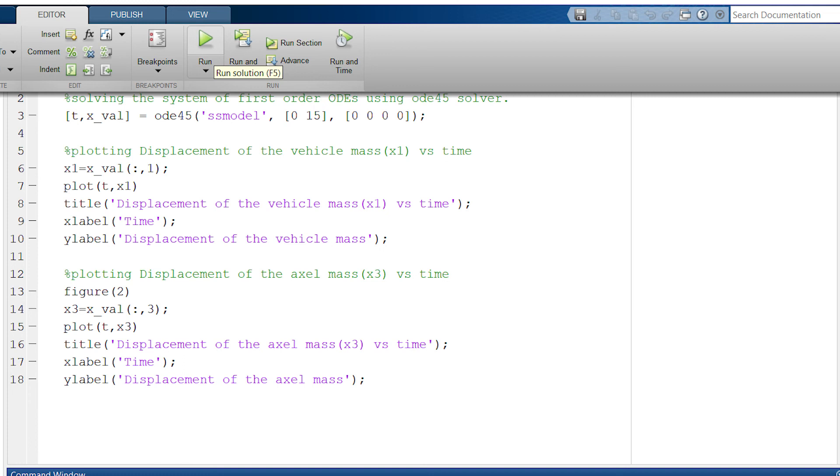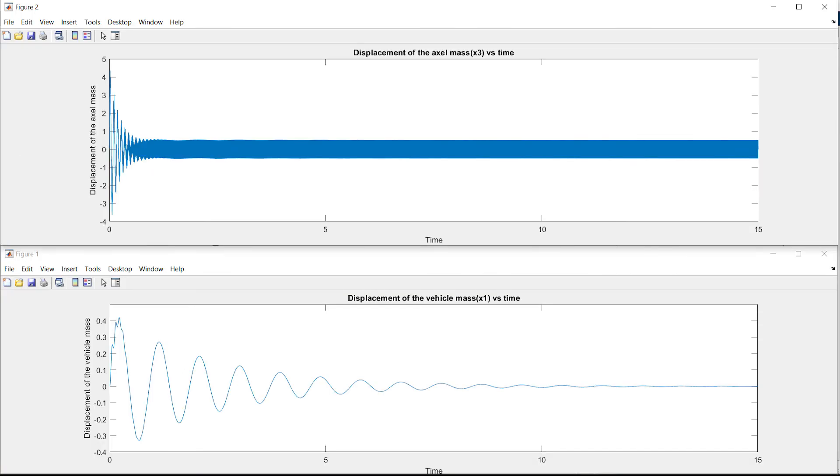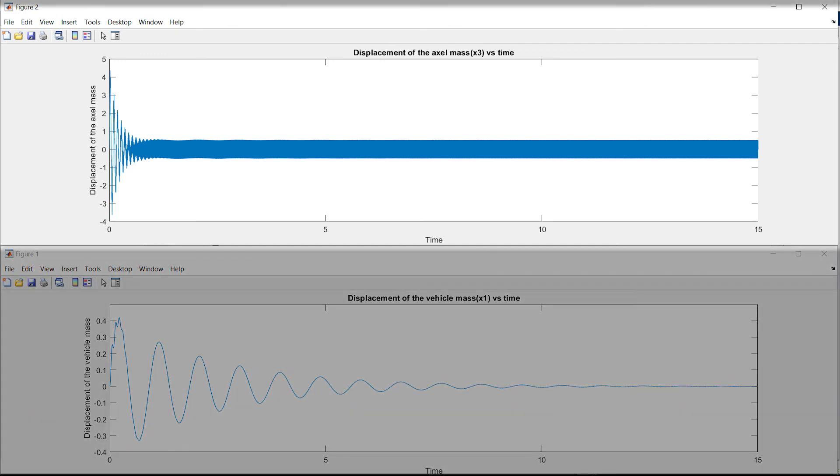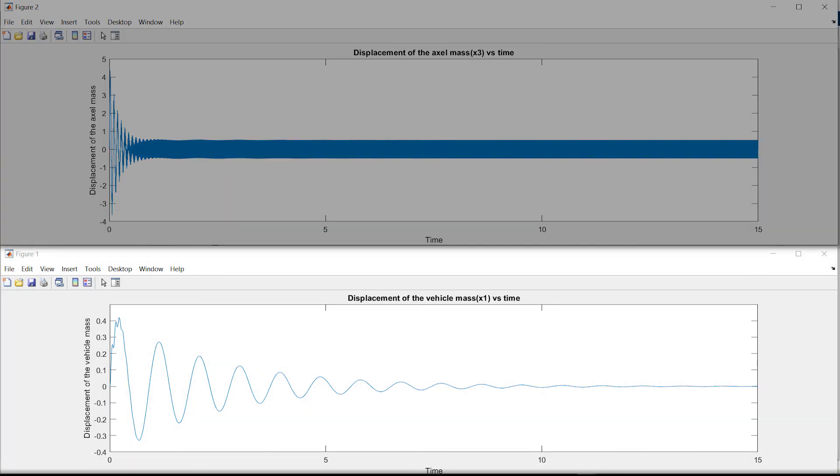Now, I have two graphs. This is the displacement of the axle mass versus time and this is the displacement of the vehicle body mass versus time. You can see that the suspension setup is working because the displacement of the vehicle body mass becomes very subtle after some time.